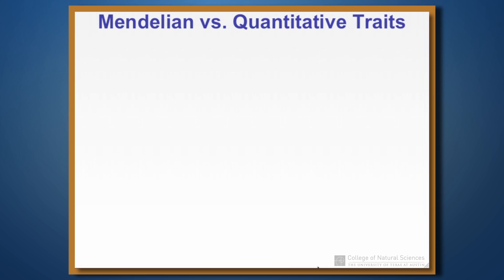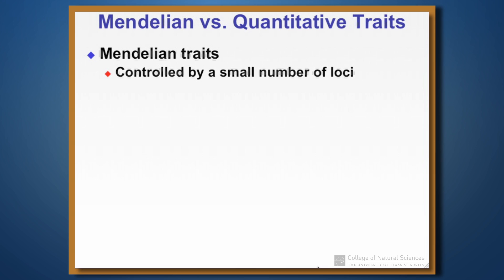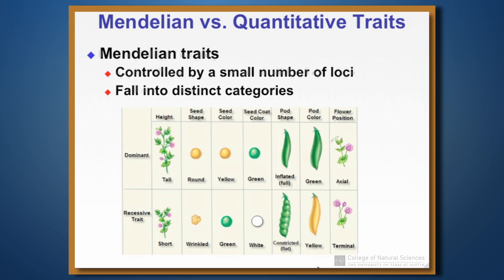First, let's understand the difference between Mendelian and quantitative genetics. When we talk about a Mendelian trait, we're talking about a trait controlled by one or some very small number of loci. Because of being controlled by such a small number of loci, the traits tend to fall into distinct categories. For example, Mendel's peas fell into categories — the peas could be round or wrinkled, yellow or green. These were categorical differences, not continuously varying changes.